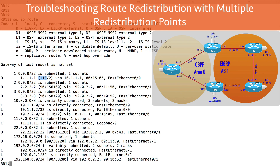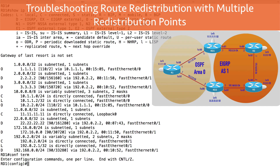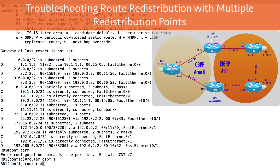Notice the administrative distances of these different routing protocols. EIGRP has an AD of 90 — that's the default. OSPF has an AD of 110 — that's the default. However, in some troubleshooting scenarios, we might want to make OSPF more believable than EIGRP. Here's how we could do that: we use the distance command. That command works not just with OSPF — it also works with EIGRP and with RIP. We go into router configuration mode for OSPF process ID 1 and say distance.